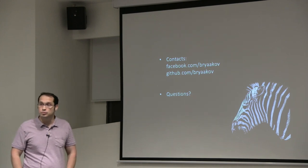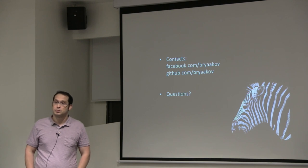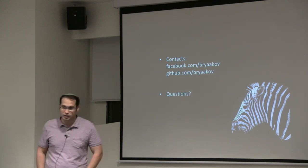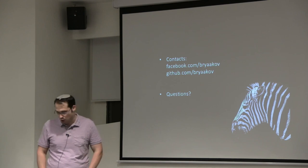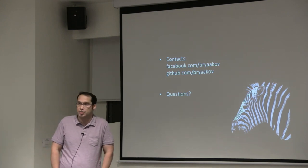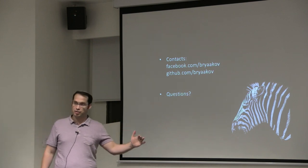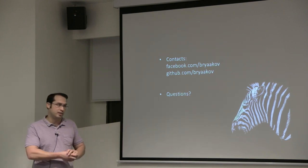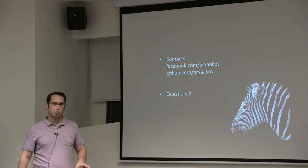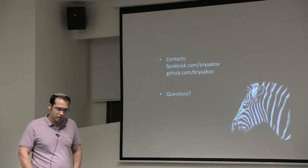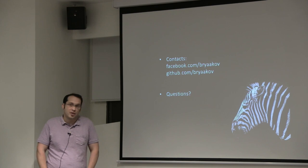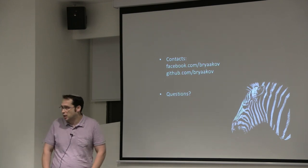Regarding large files that cannot fit in memory in one JVM: currently we don't handle that. On our roadmap is a full streaming API that will stream data from HTTP all the way to Cassandra — there's a connector in Akka Streams for writing to Cassandra. Currently we use byte arrays, so everything must fit in memory. Our practical limit is probably a couple of gigabytes.